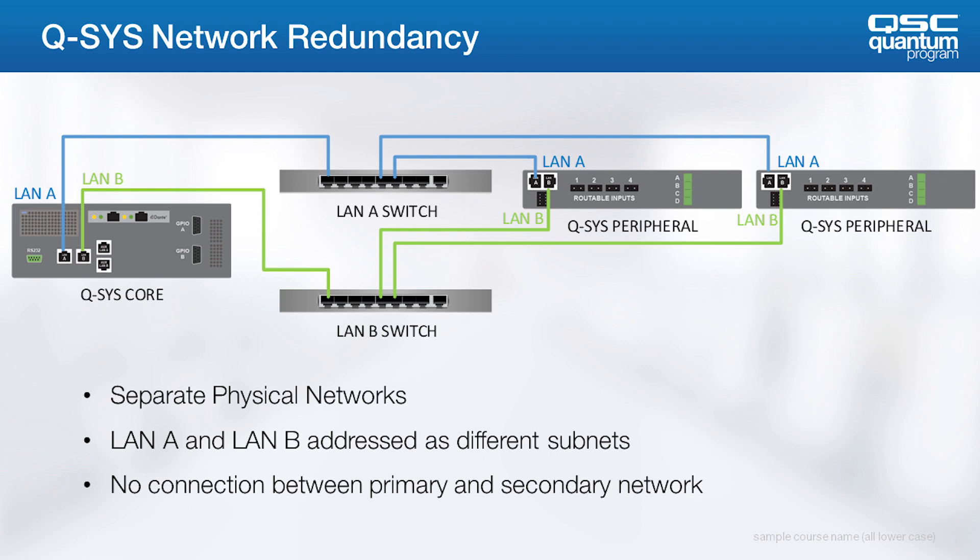LAN A and LAN B should be connected to physically separate switched networks, and should be configured as separate IP subnets. Each network should stand alone — there should be no connections between the two.